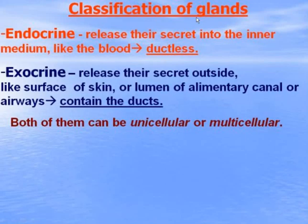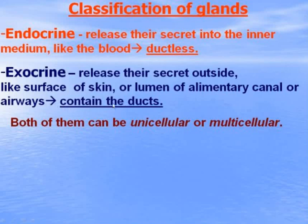These epithelial cells compose the glands, which can be divided into two groups. Endocrine glands release their secretion into the inner medium — like blood, lymph, or interstitial fluid — so they are ductless. Exocrine glands release their secretion outside, such as onto the surface of the skin, the lumen of the alimentary canal, airways, or other organs, so they contain ducts. Most glands can be unicellular or multicellular.